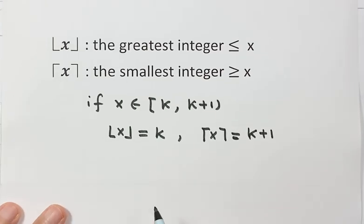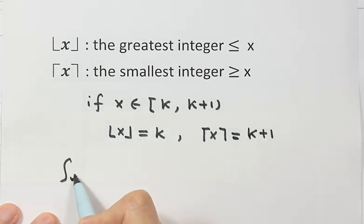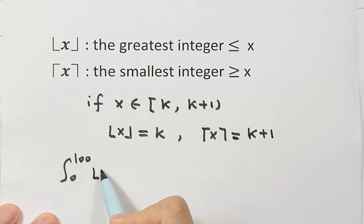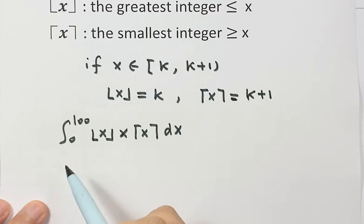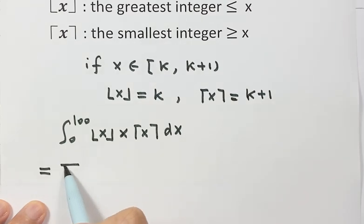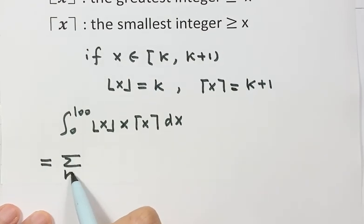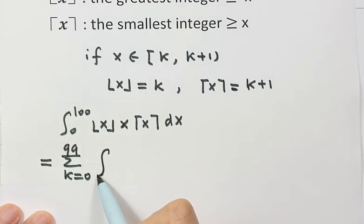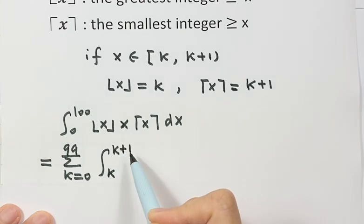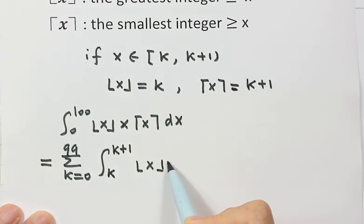Now let's start our integral. From 0 to 100, this is the floor times x times the ceiling, dx. We are going to write the integral as a sum of integrals, with k from 0 to 99. The lower bound is k and the upper limit is k+1, then the function inside.